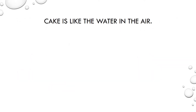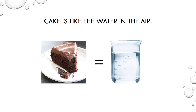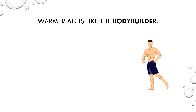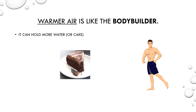In this analogy, the piece of cake is like the water in the air. The amount of cake consumed did not change — it was the same, or constant. Warmer air is like the bodybuilder. Just like how the bodybuilder can eat more cake, warmer air can hold more water. They have a higher capacity.